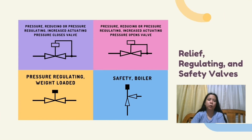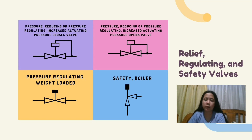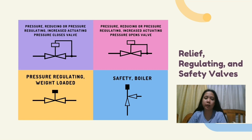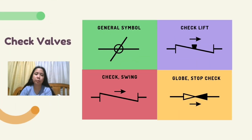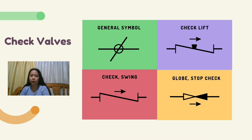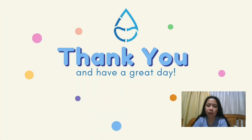Pressure reducing or pressure regulating — increase in actuating pressure closes valve. Pressure reducing or pressure regulating — increase in actuating pressure opens valve. Pressure regulating weight-loaded. Safety boiler. What is a regulating valve? Regulating valves are used for adjusting or monitoring flow volumes and directions, designed for use in metering, blending, weighing, and filling system applications — the ideal solution for precision control of flow rates or pressure. What is a safety valve? A safety valve can be considered a pressure reducing or pressure removing device. When there is excessive internal fluid pressure, this valve opens so that damage to the system can be prevented. These valves are commonly used in gas and steam lines. Check valve symbols: general symbol, check lift, check swing, and globe stop check. Thank you and have a great day.